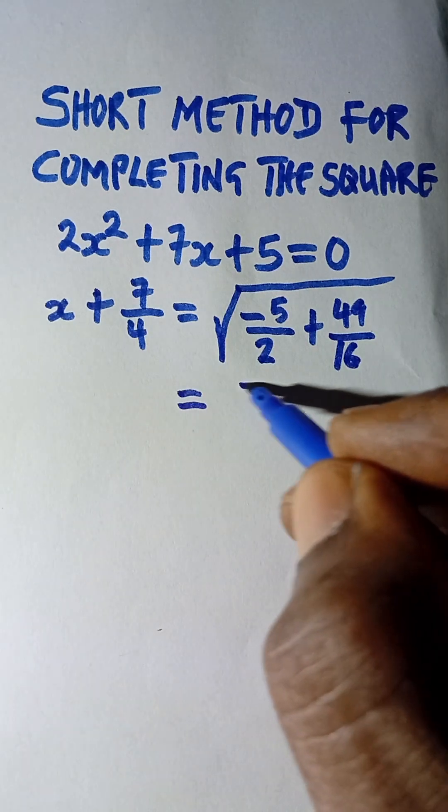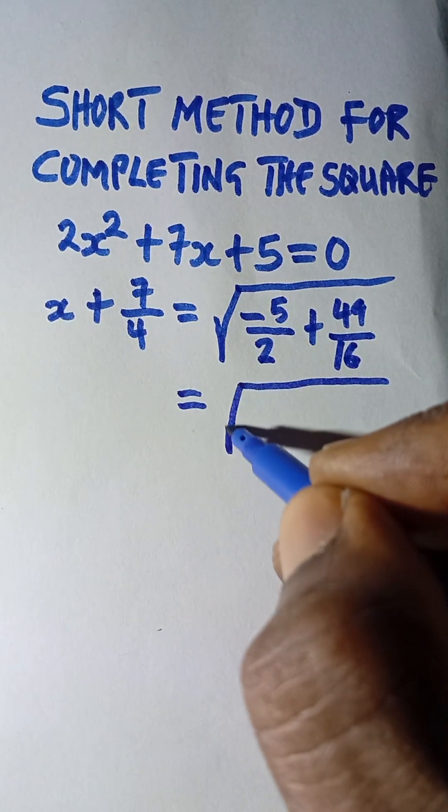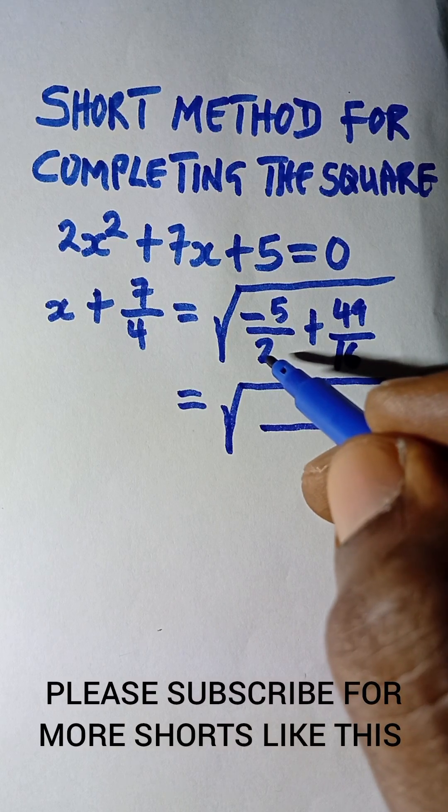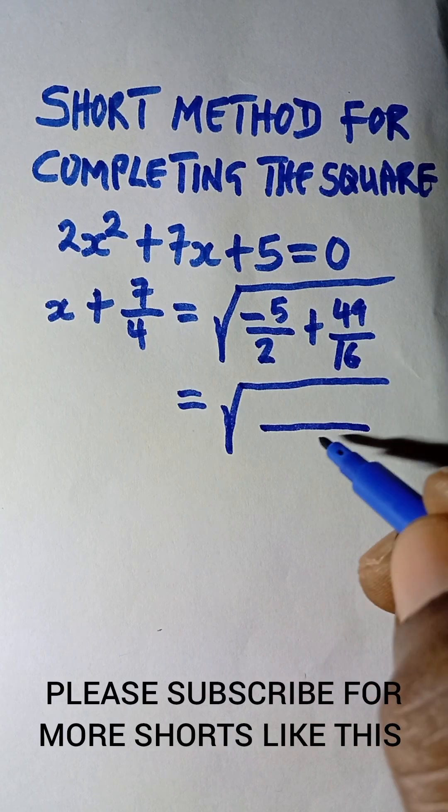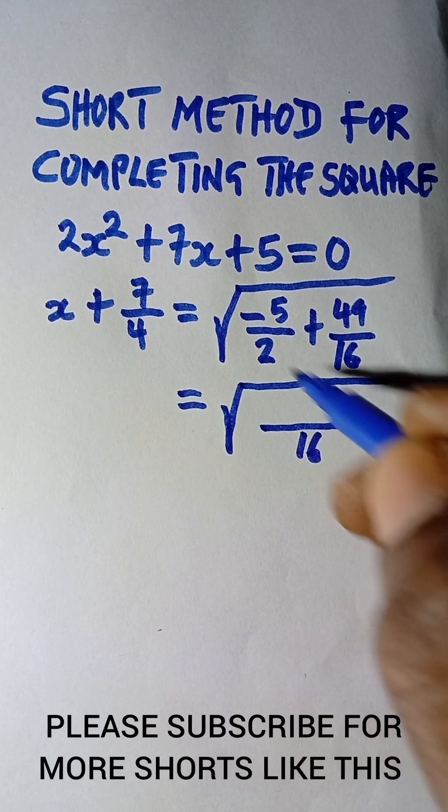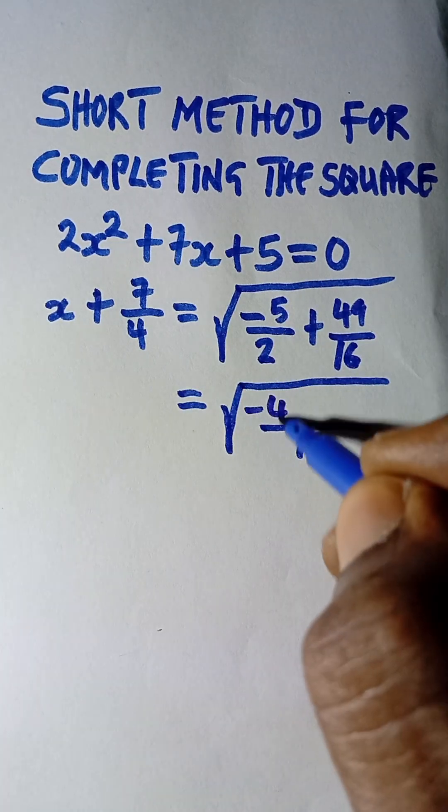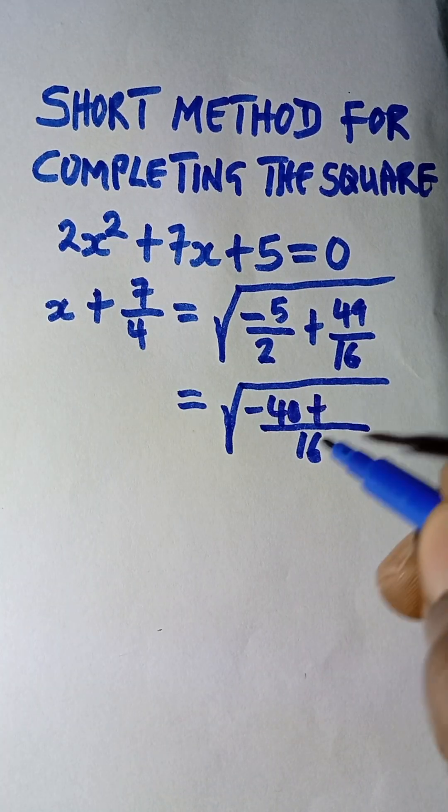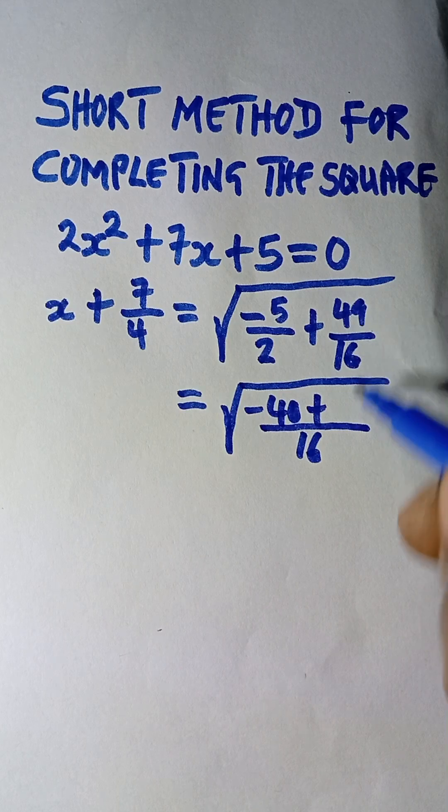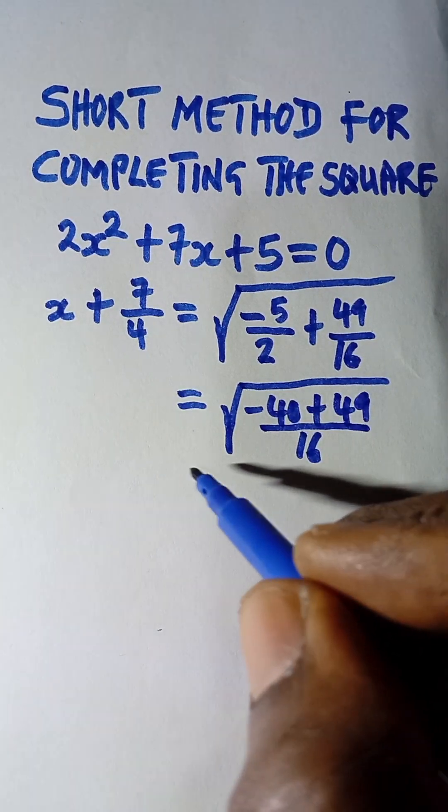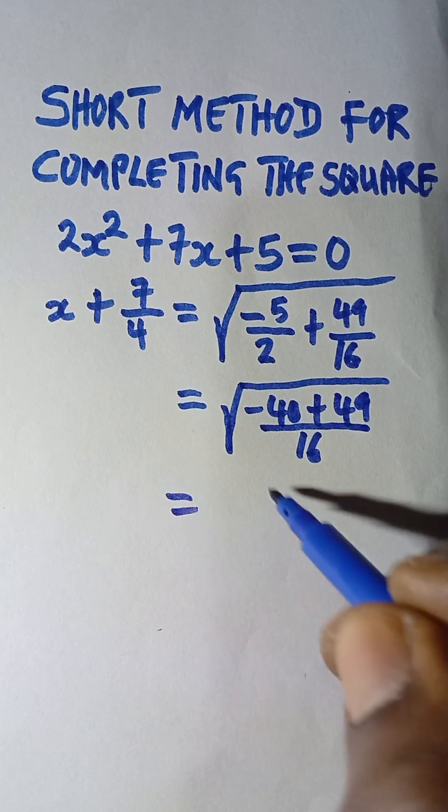So once you've got to this level, the next thing is to simplify. I'm going to take the square root here. The LCM or the common denominator for 2 and 16 is 16. 16 divided by 2 is 8 times minus 5, that's minus 40, plus 16 divided by 16 is 1 times 49, that's 49.